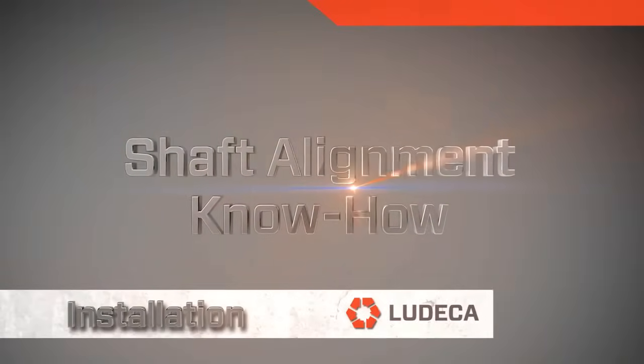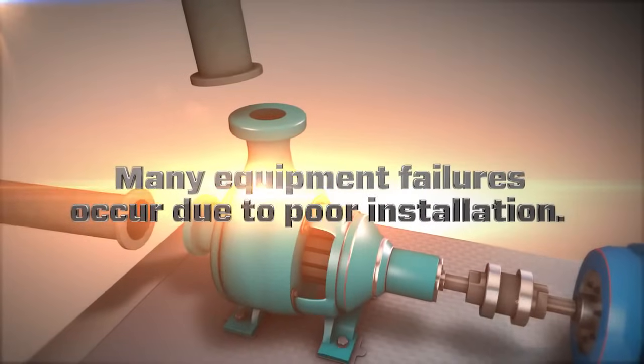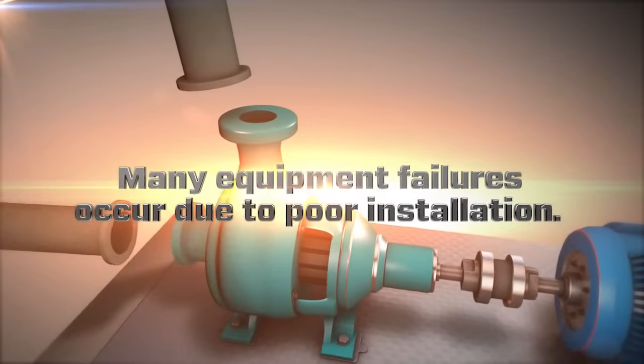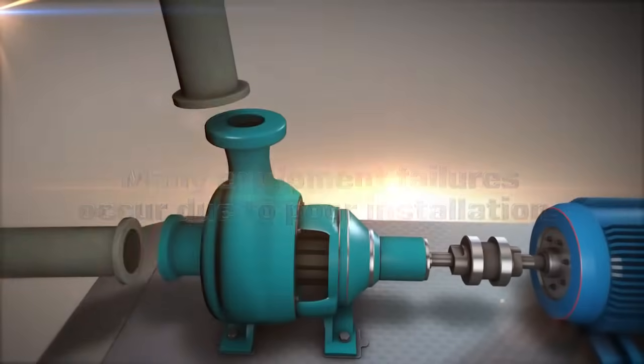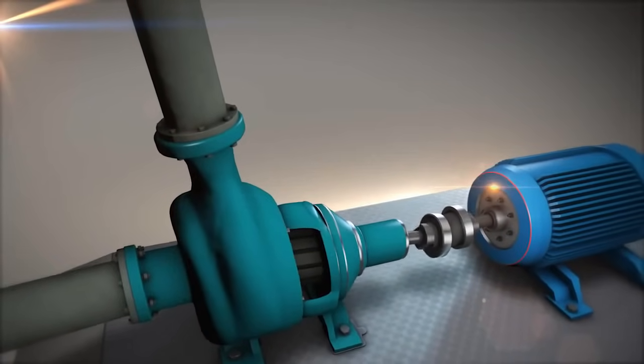Shaft alignment know-how: Installation. Many equipment failures occur during what is called the infant mortality period. In other words, soon after machines are first put in service and are typically due to poor installation.